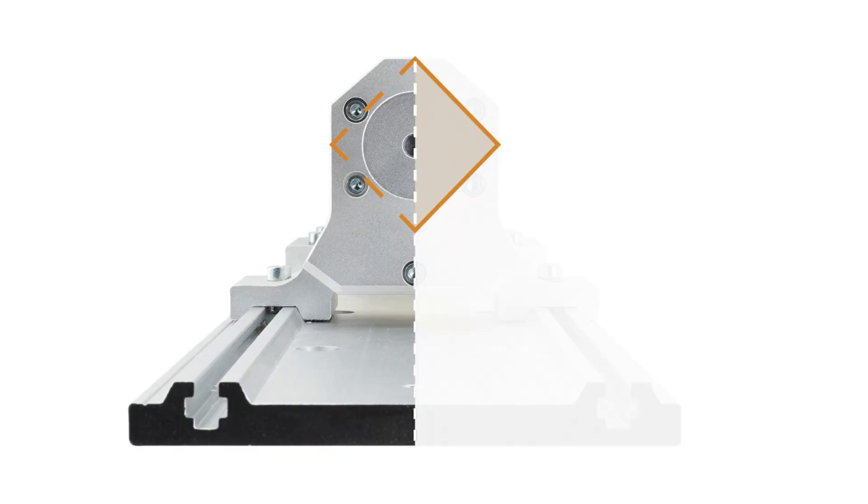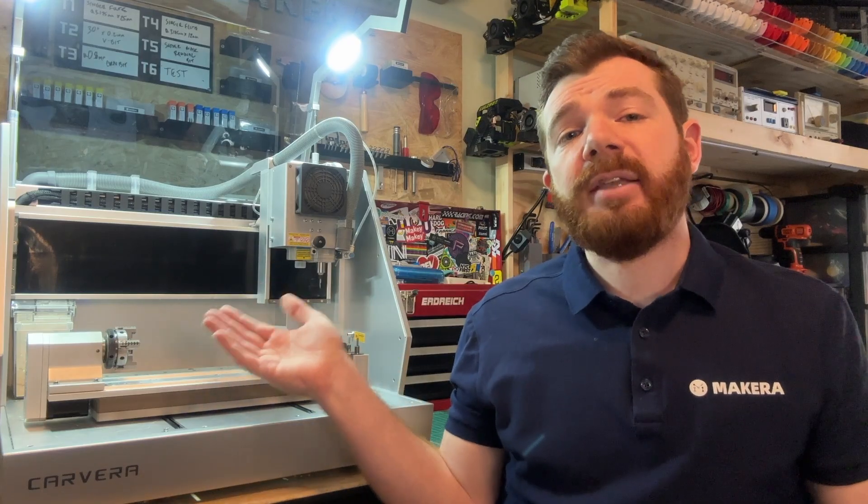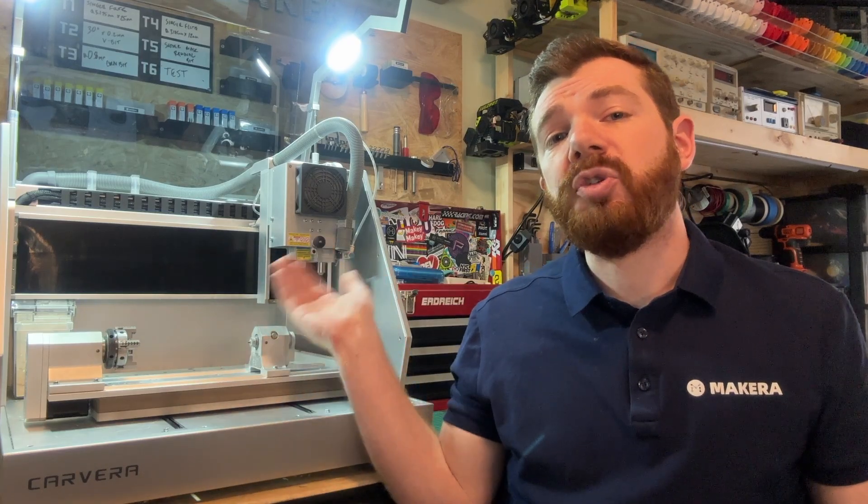We typically rotate square stock so the corner aligns with the vertical axes or up and down as shown in the example guidebook. And before running any jobs with a fourth axis module, we also need to prepare our tool head.